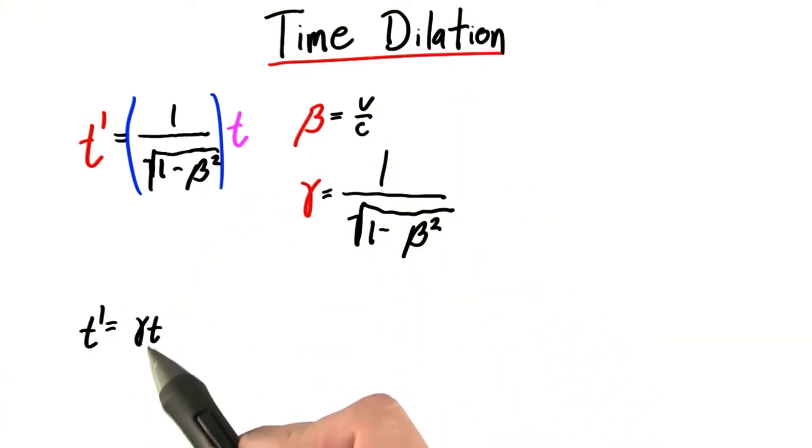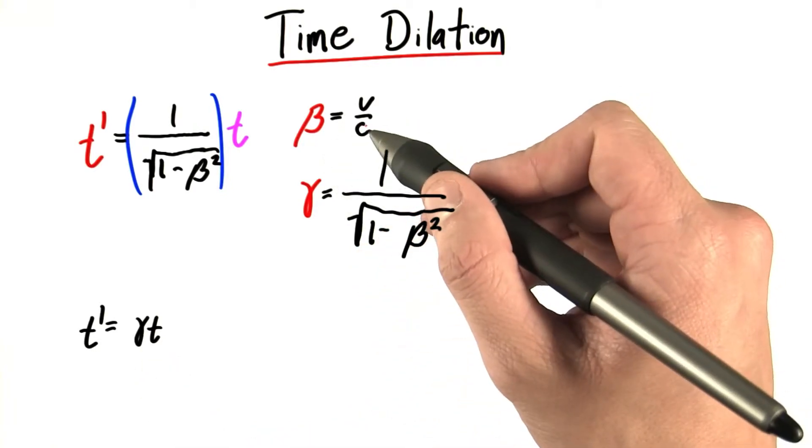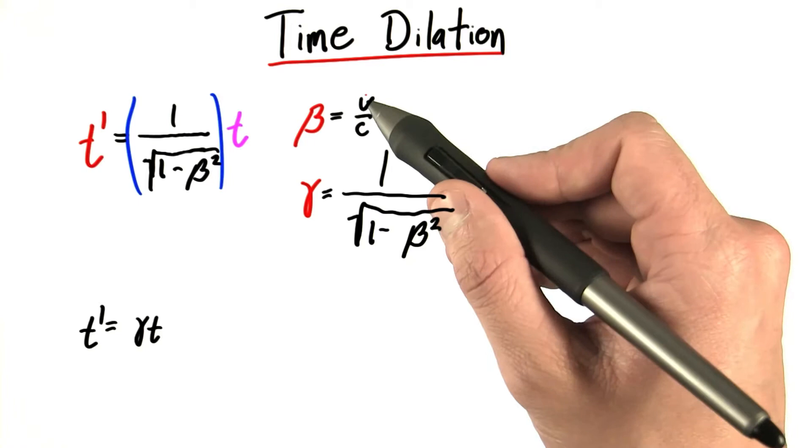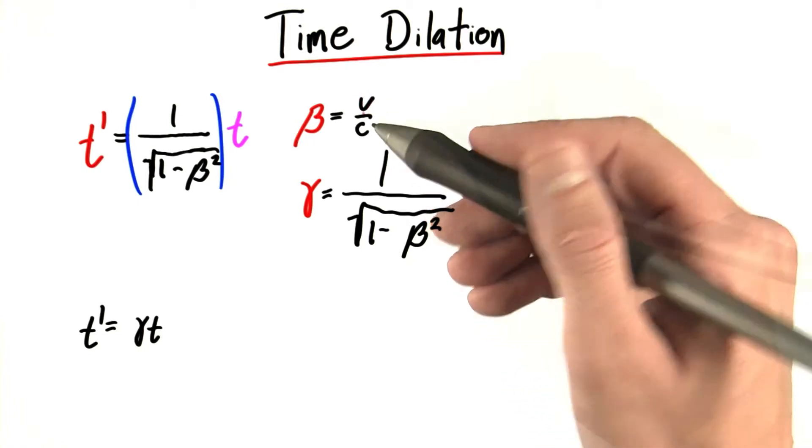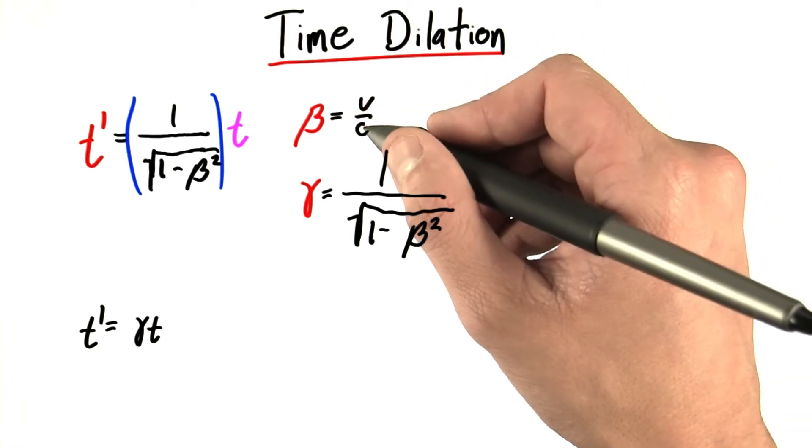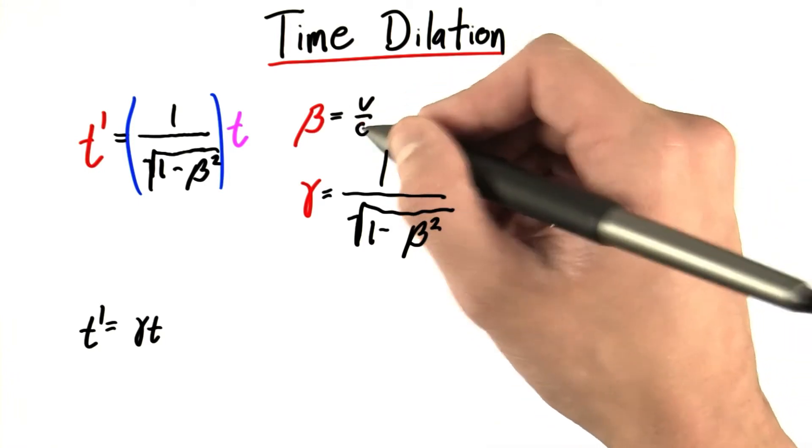So actually, in order to understand what's going on here, we need to understand gamma a little better. So first, let me tell you, without giving you much proof, and I'm sorry for doing that, that v, the speed that we can move or that our frame of reference can move, well, it has an upper bound. It can't go any faster than c. It can't go faster than the speed of light.